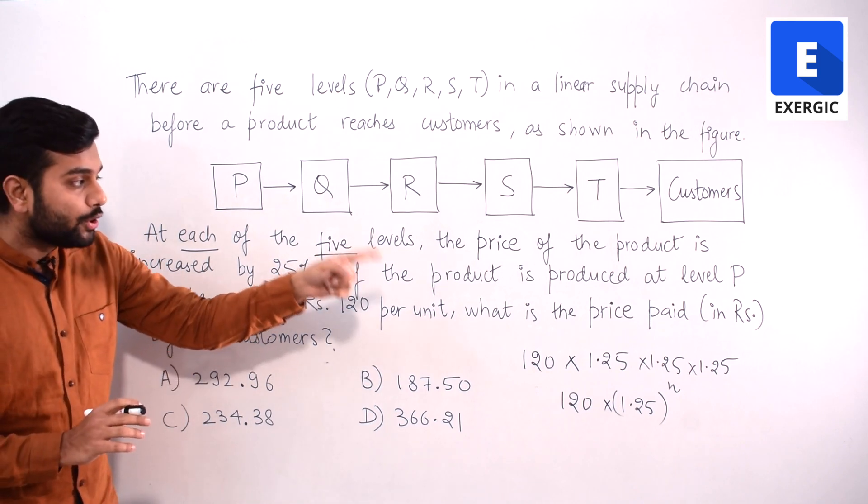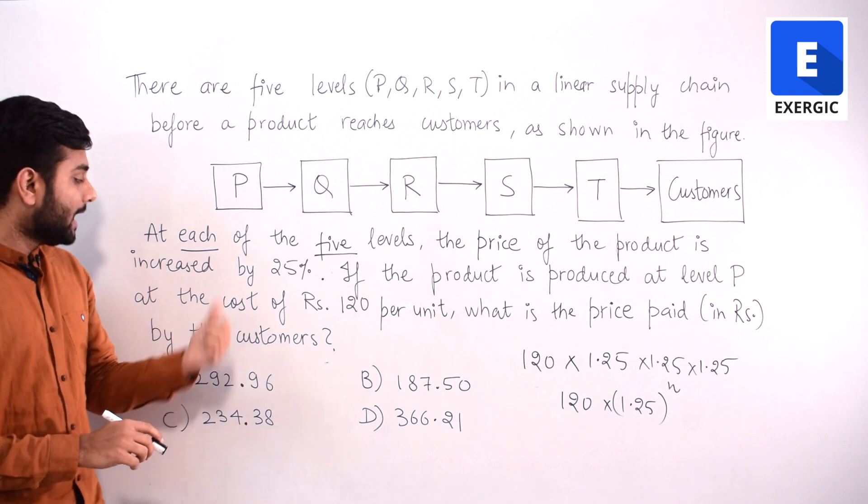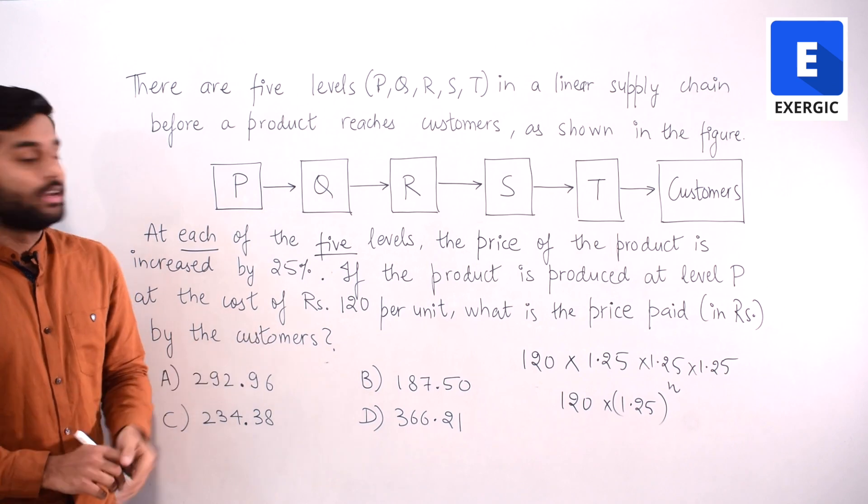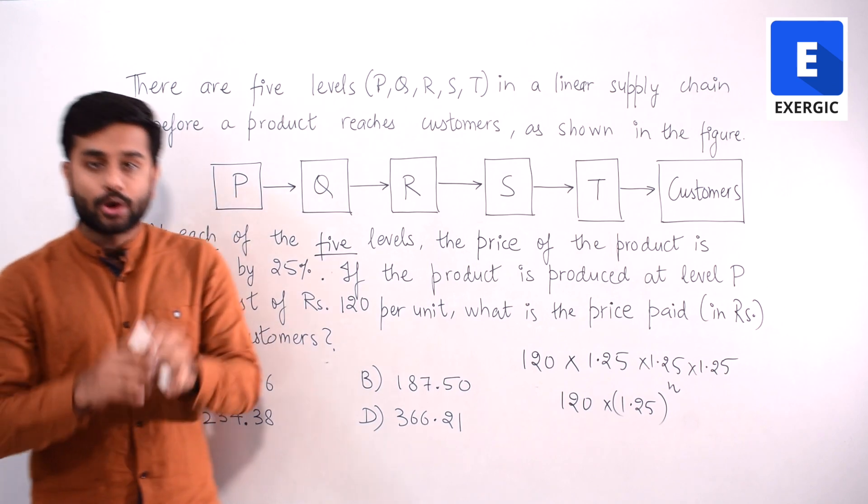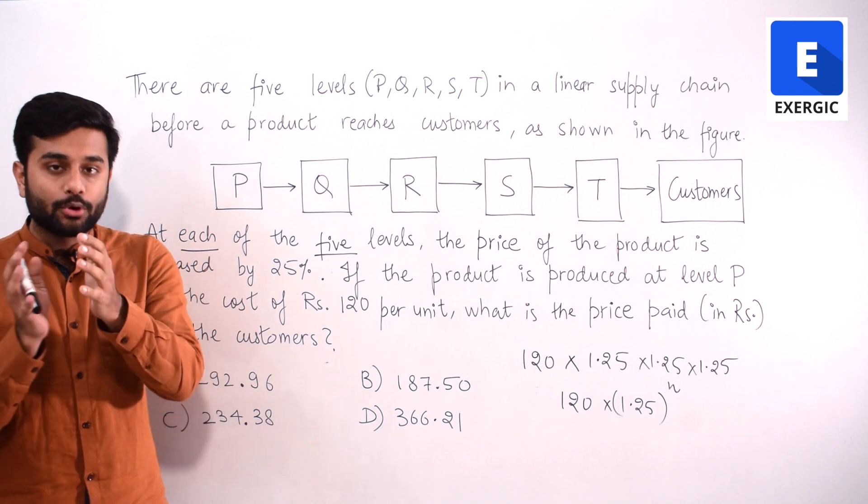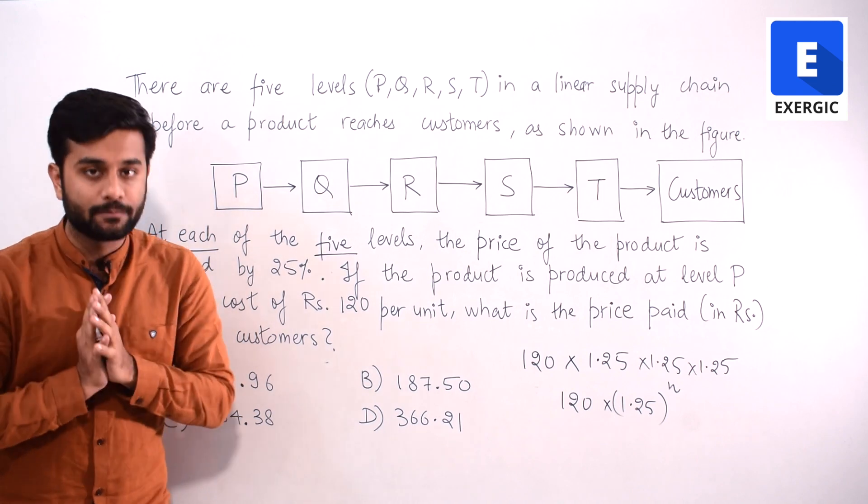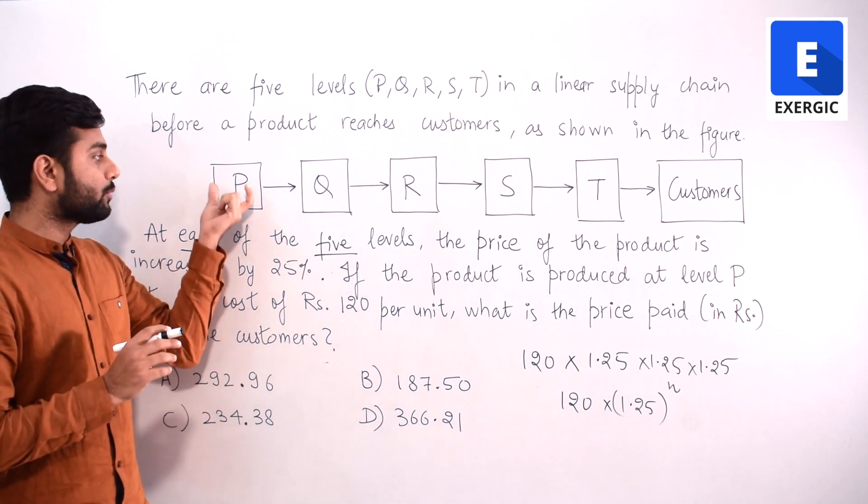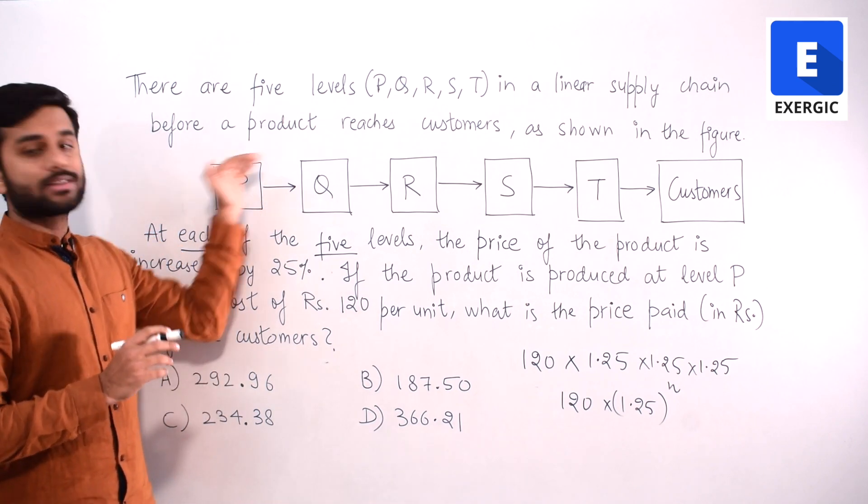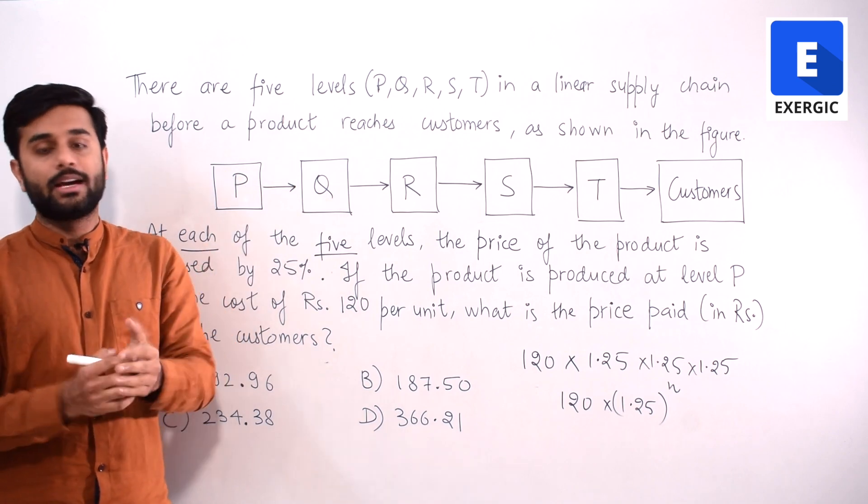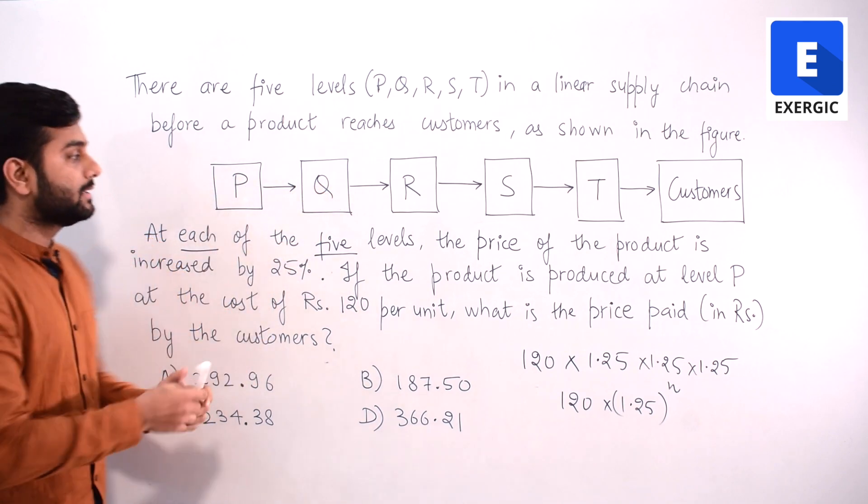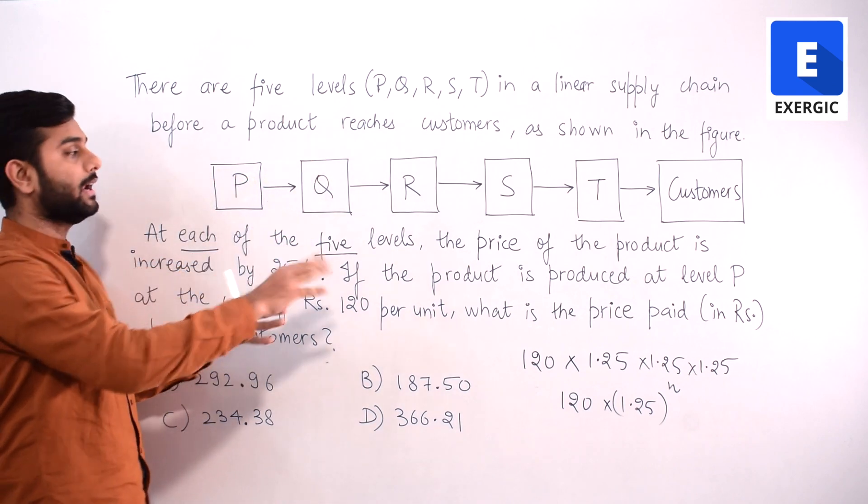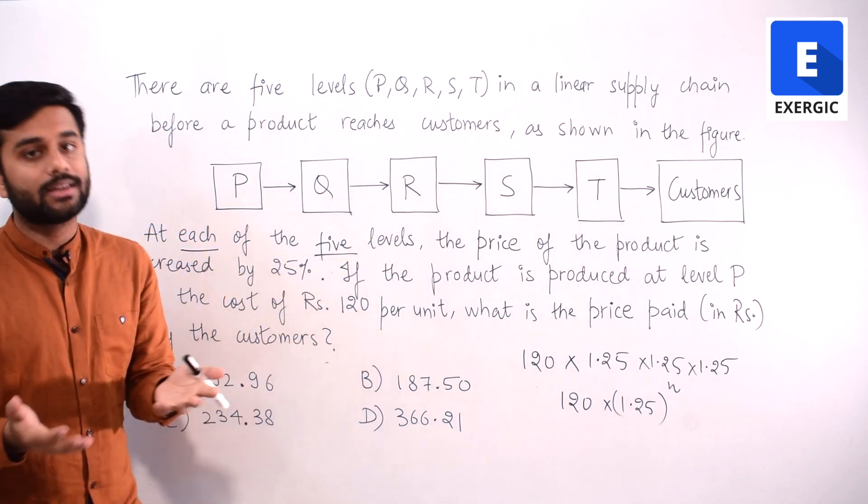If the product is produced at level P at the cost of rupees 120 per unit, then what is the price paid by the customer? So P is that level where production is happening, and it is being produced at a cost of 120 at this level. Now many students are thinking that since it is producing it at this level, production is happening, price will not increase. It will just send it to Q. They are considering this is the place where it is feeding the product, and here the price will start increasing. Why to think that?